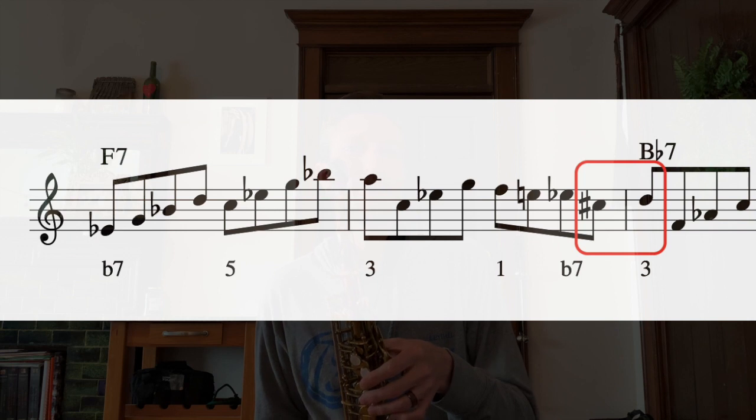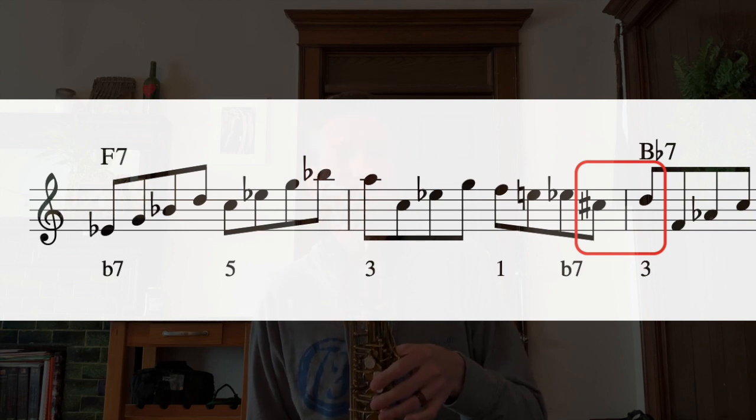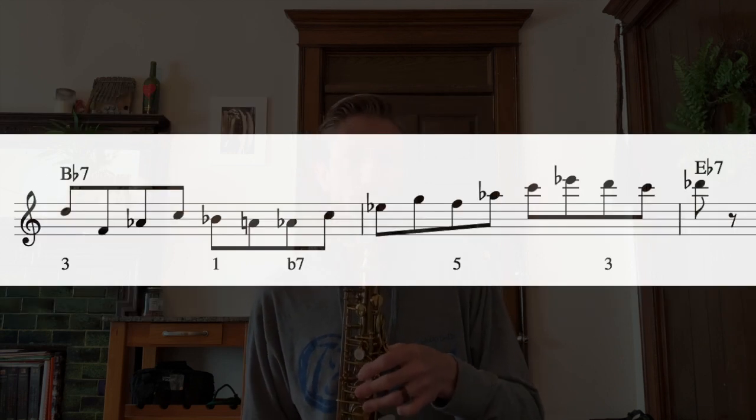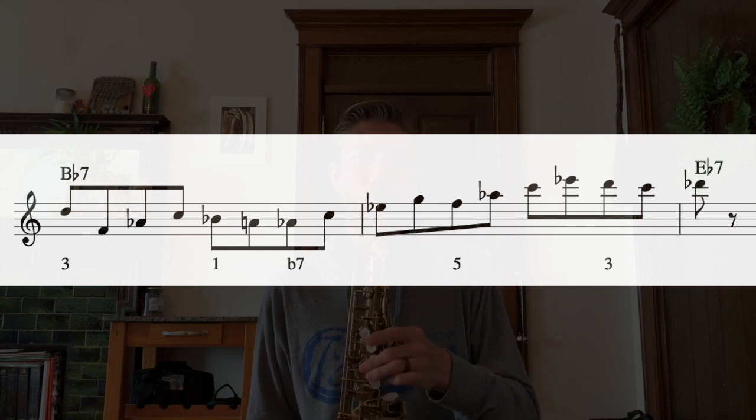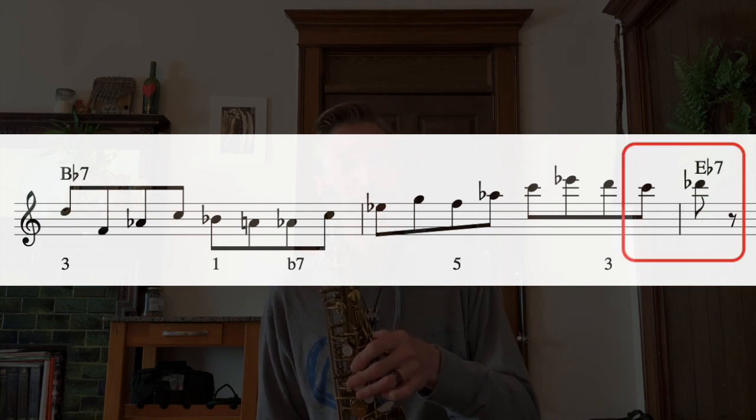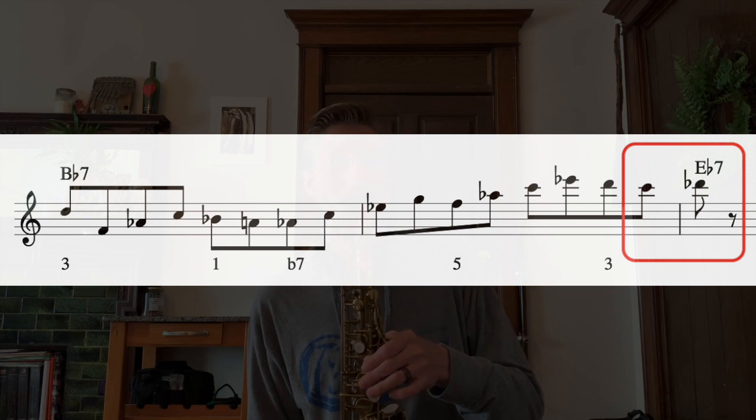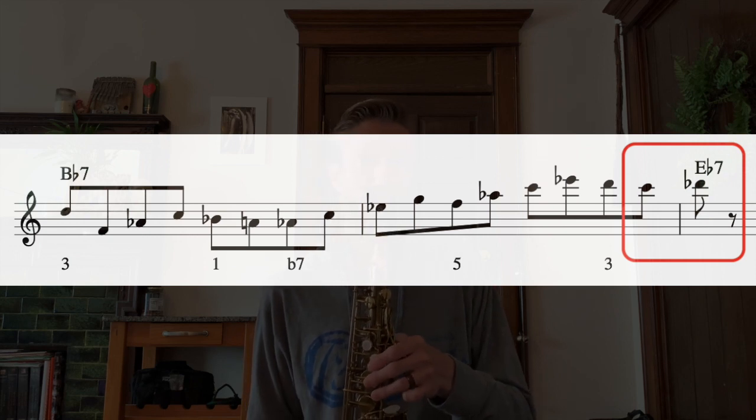Now, I just add a half step into the third of Bb7. And now, another half step into the seventh of Eb7. And you see the pattern, it just alternates third, seven, third, seventh throughout the entire cycle of fifths.